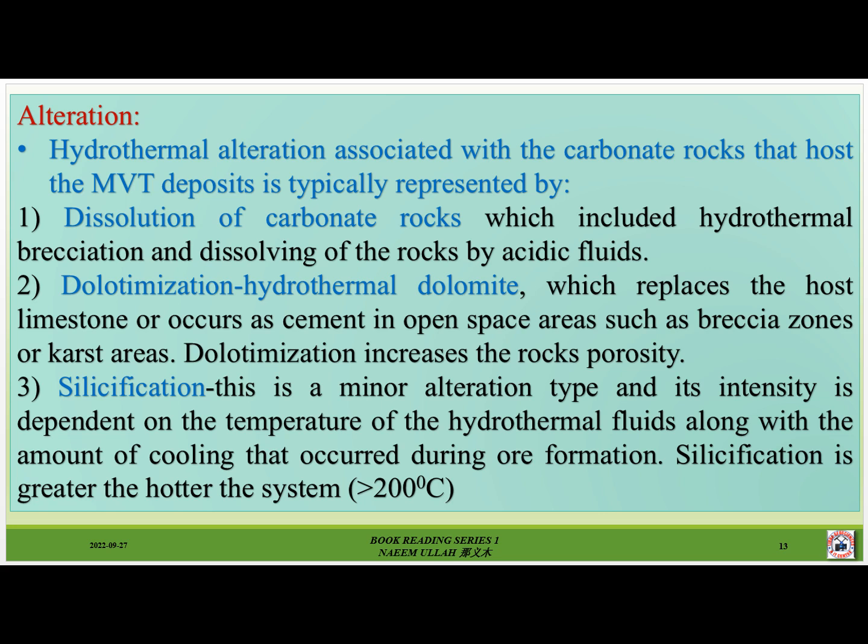Hydrothermal alteration associated with the carbonate rocks hosting MVT deposits is typically represented by: first, dissolution of carbonate rocks, which includes hydrothermal brecciation and dissolving of rocks by acidic fluids; second, dolomitization — hydrothermal dolomite which replaces the host limestone or occurs as cement in open space areas such as breccia zones or karst areas. Dolomitization increases the rock's porosity. Silicification is a minor alteration type, and its intensity is dependent on the temperature of the hydrothermal fluids and the amount of cooling that occurred during ore formation — silicification is greater the hotter the system.